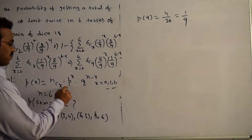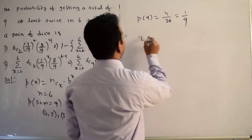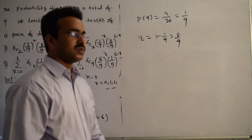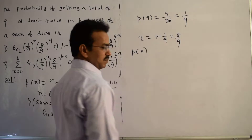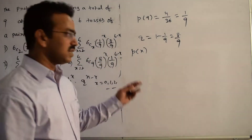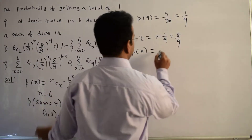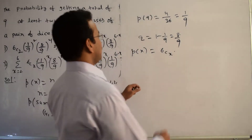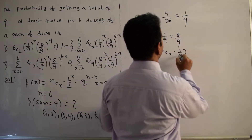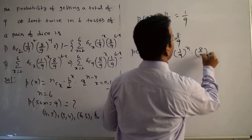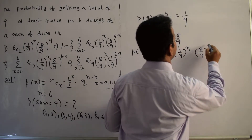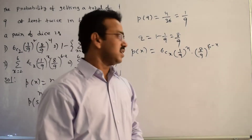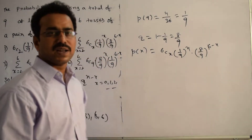So p = 1/9. Then q = 1 − 1/9 = 8/9. Therefore, the probability mass function of the binomial distribution is: P(X) = 6Cx · (1/9)^x · (8/9)^(6−x). This is the mass function of the binomial distribution.